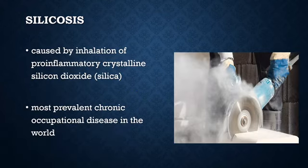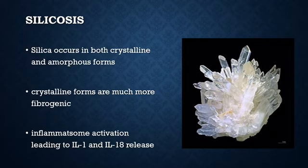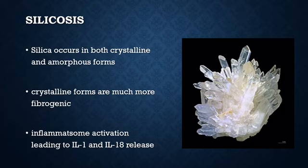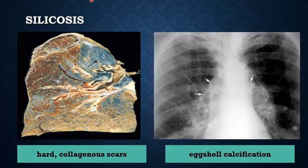Silicosis is a common lung disease caused by inhalation of pro-inflammatory crystalline silicon dioxide, called free silica, that usually presents after decades of exposure as slowly progressing nodular fibrosing pneumoconiosis. Currently, silicosis is the most prevalent chronic occupational disease in the world. Silica occurs in both crystalline and amorphous forms, but crystalline forms — including quartz, cristobalite, and tridymite — are much more fibrogenic. The phagocytosed silica crystals activate the inflammasome, leading to the release of inflammatory mediators, particularly interleukin-1 and interleukin-18. Silicosis is characterized grossly in its early stages by tiny, palpable, discrete, pale-to-blackened nodules in the hilar lymph nodes and upper zones of the lungs. As the disease progresses, these nodules coalesce into hard collagenous scars. Fibrotic lesions may also occur in the hilar lymph nodes and pleura.